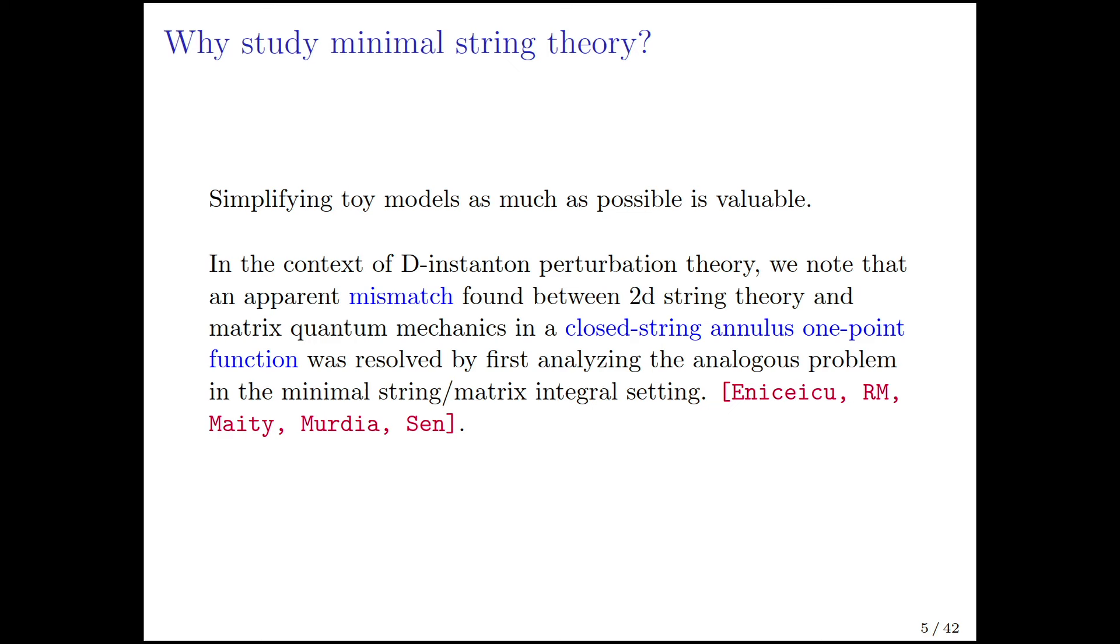Before I move on, I would like to say that there's another approach to non-perturbative minimal string theory which has been pioneered by Clifford Johnson in recent years. I will not have much to say about that, but you should read his papers. So you might ask, this procedure has now passed the test of even 10D critical superstring theory, so why am I studying minimal string theory with this method? The basic lesson is that simplifying toy models as much as possible is valuable. In this current context, there was an apparent mismatch between 2D string theory and matrix quantum mechanics in an annulus one-point function, and we were able to resolve this by first analyzing the analogous problem in the minimal string setting.